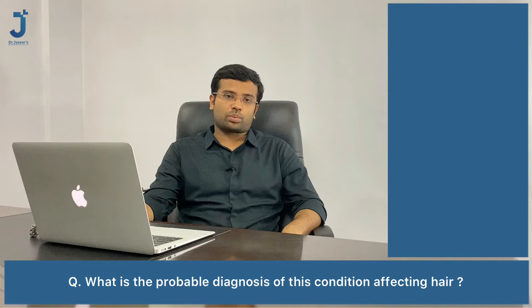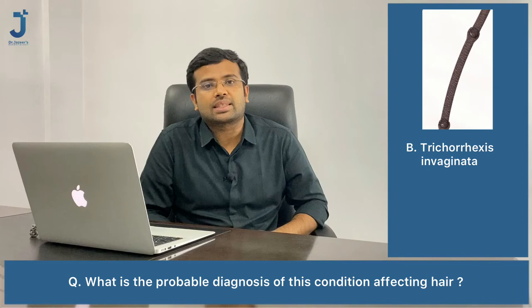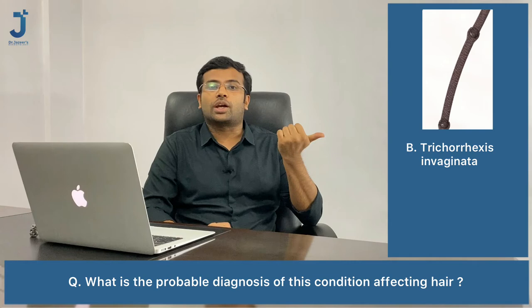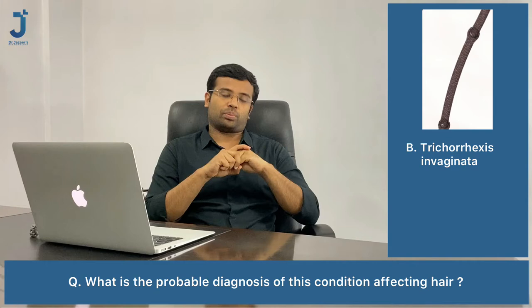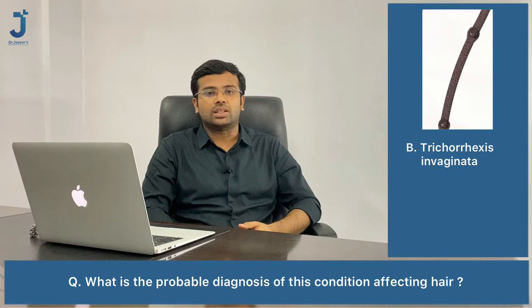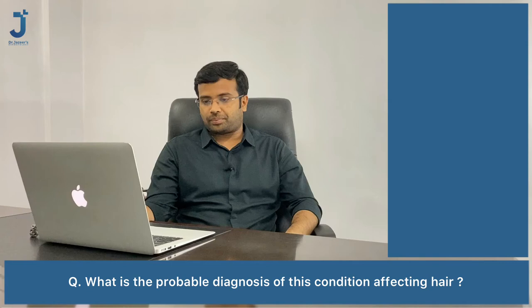Trichorrhexis invaginata shows a ball-and-socket finding on trichoscopy. This is also called bamboo hair and is seen as part of Netherton syndrome.